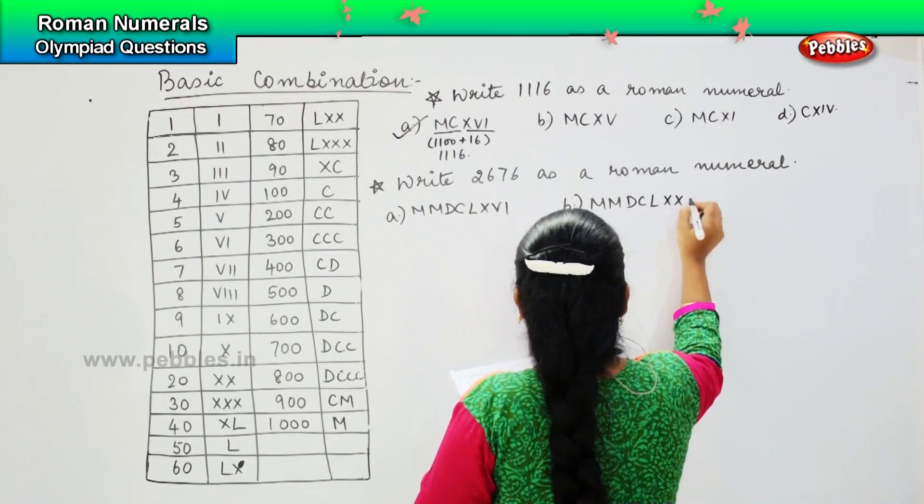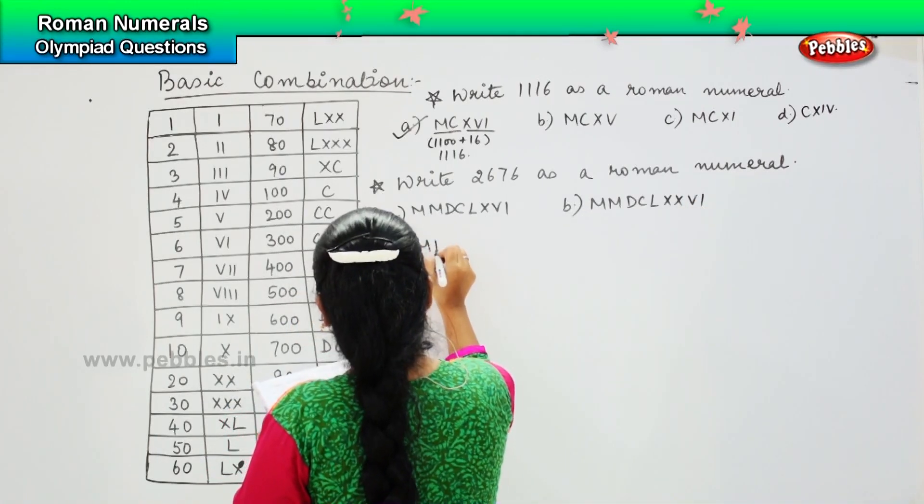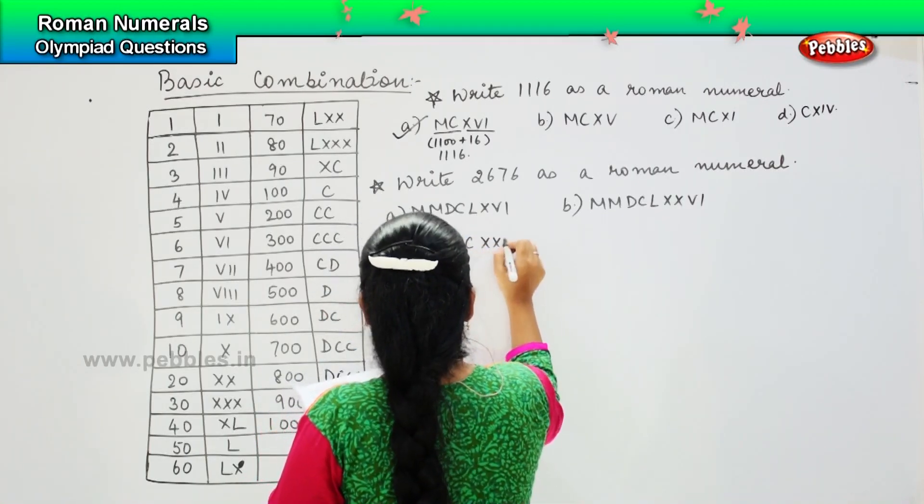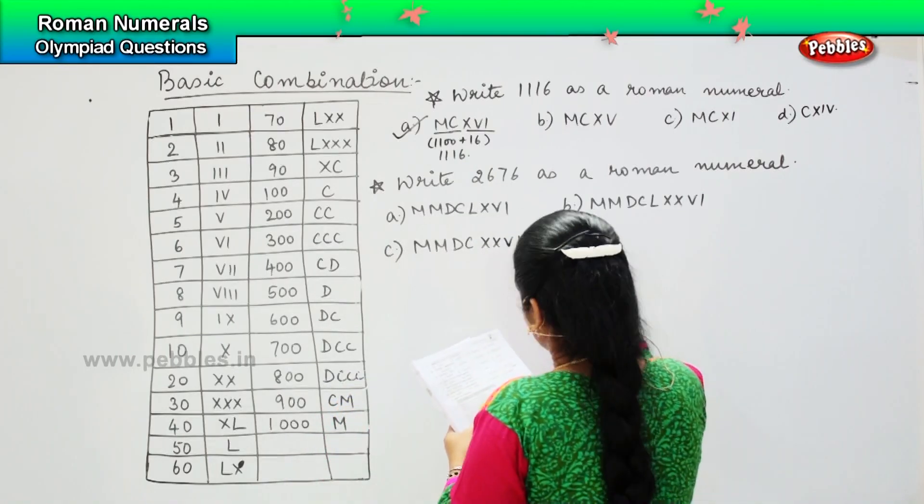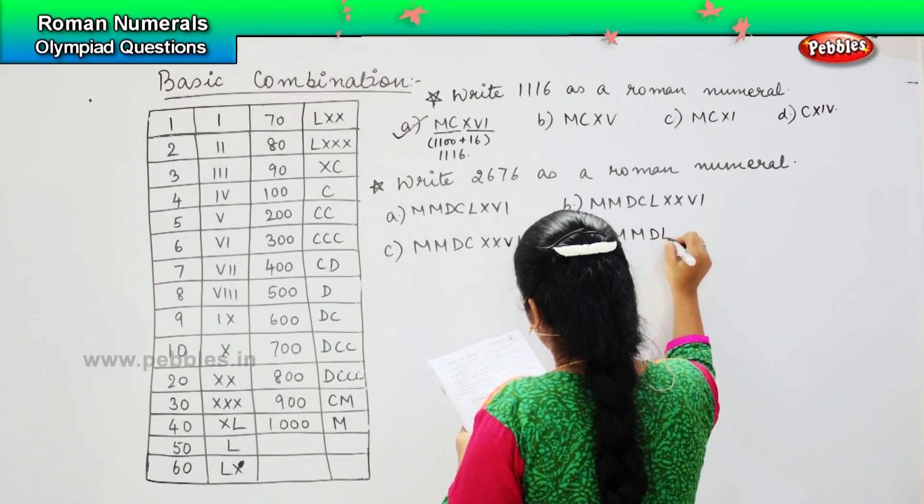Option C, MMDCXXVI; and option D, MMDLXXVI. So double M is two thousand.